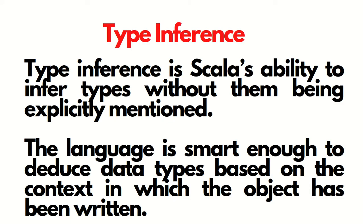The very first feature that we have is type inference. So what is type inference? It's Scala's ability to infer types without them being explicitly mentioned. It means Scala is smart enough, intelligent enough to recognize the type of a variable without having to specify that data type. It's called type inference.